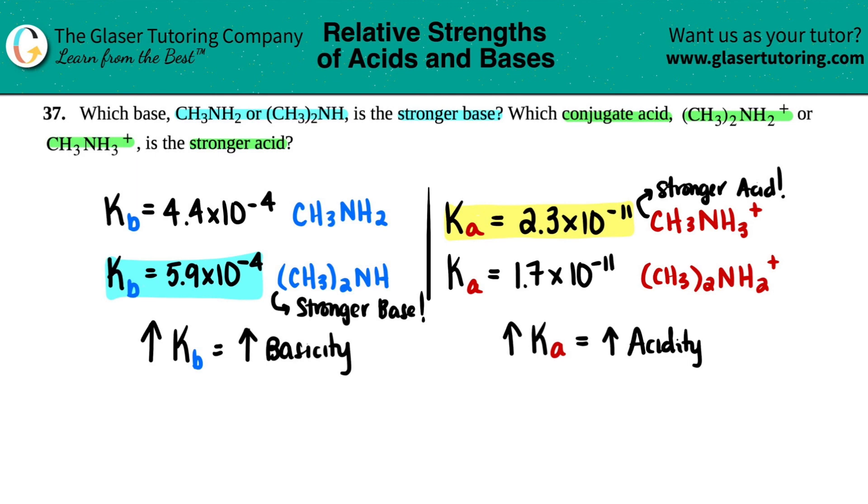The one thing I do want to say, though, is you have to compare KB to KB. You can't compare a KB value with the Ka. They have to be the same. But that's it.